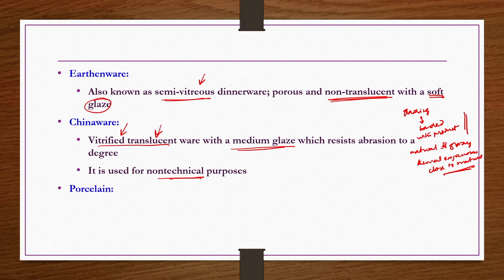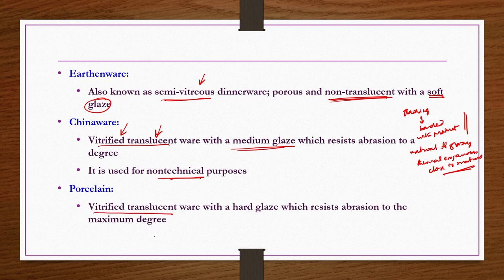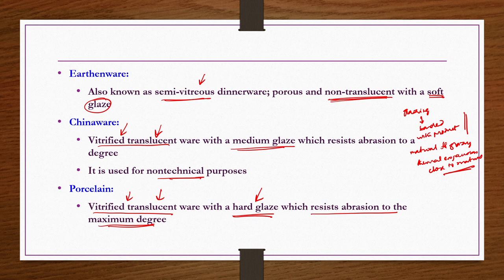Porcelain is also vitrified and translucent like chinaware, but it has a hard glaze. Since the glaze is hard, it can resist abrasion to the maximum degree. So in the classification sequence: earthenware is semi-vitreous and non-translucent with soft glaze, chinaware and porcelain are vitrified and translucent, chinaware has medium glaze, and porcelain has hard glaze. As the degree of glazing increases, resistance to abrasion also increases.